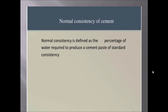The next test is normal consistency of cement. Normal consistency is defined as the percentage of water required to produce a cement paste of standard consistency. The main purpose of the test is to determine the percentage of water required for the preparation of cement paste. Let's watch a video.